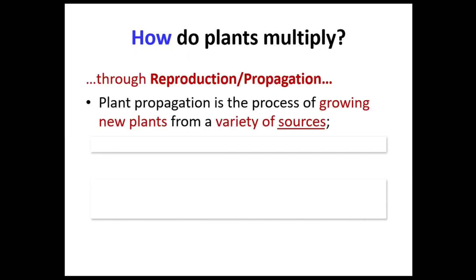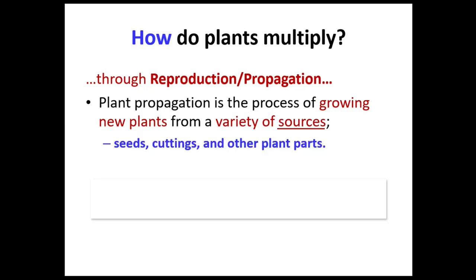How do plants multiply? Through reproduction or propagation. Plant propagation is the process of growing new plants from a variety of sources — either through seeds, cuttings, or other plant parts.